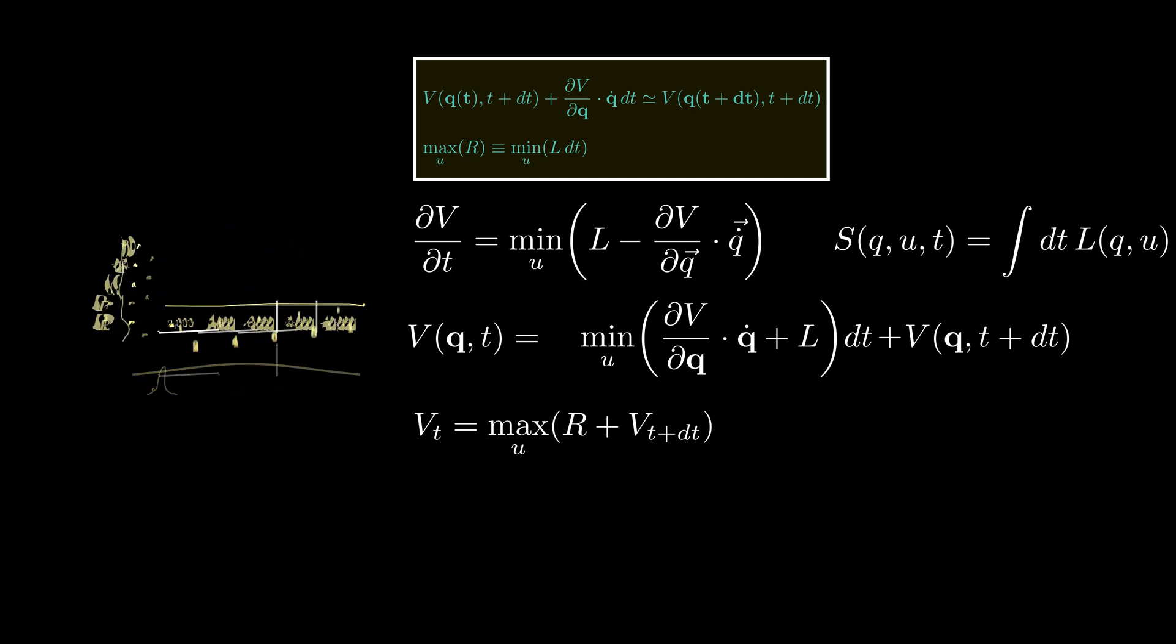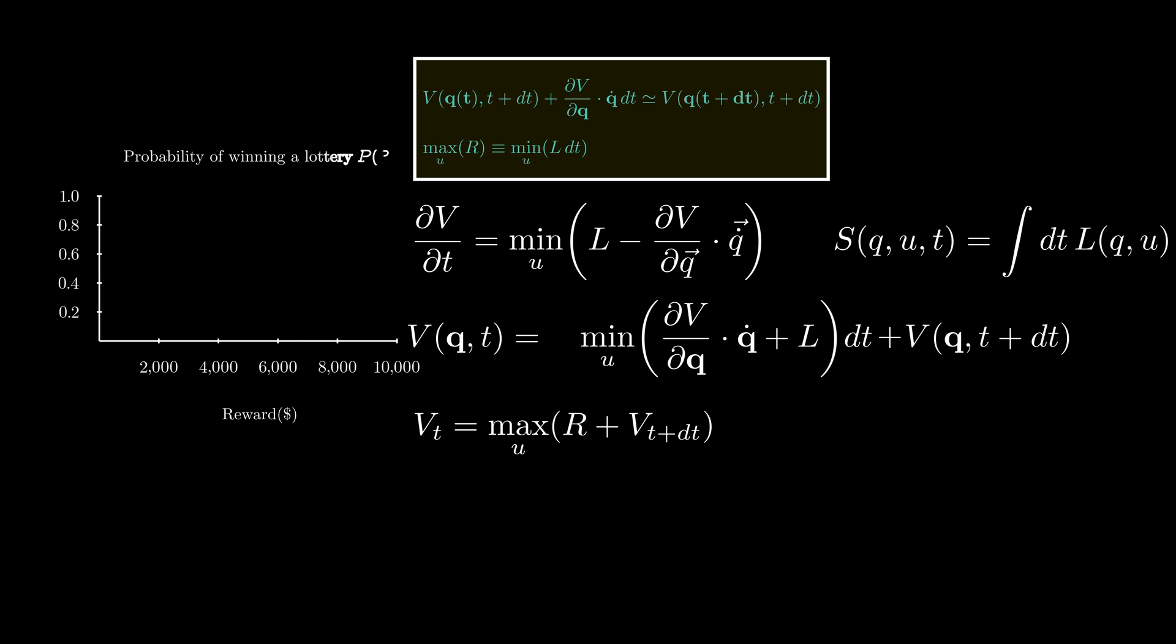For example, the reward R should be viewed as the probability of having the reward. Also, since the left-hand side must still be deterministic, we replace the right-hand side with its expectation value.